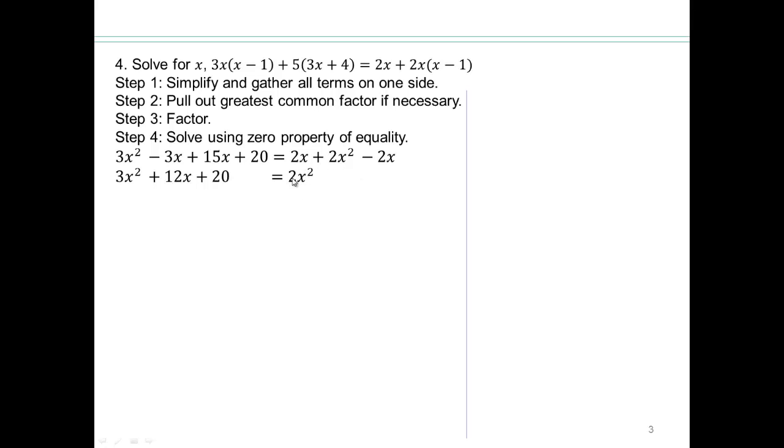Remember, we want a zero on one side, so let's subtract 2x² from both sides. So 3x² - 2x² will give you x² + 12x + 20 equals zero. Now we have the zero that we want, so we can now go to for my eyes only column and factor.